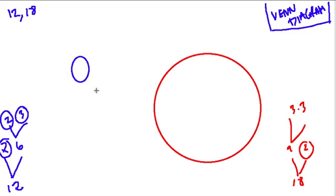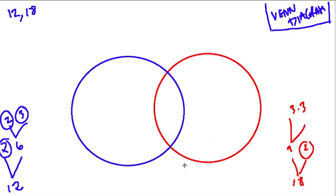Okay. That's okay. So now, how do we do this? Well, this red circle is for 18, and this blue circle is for 12.